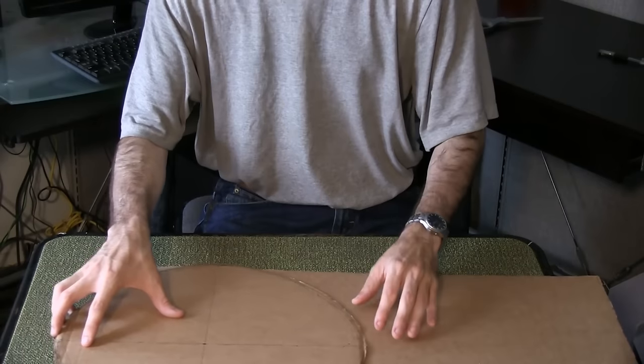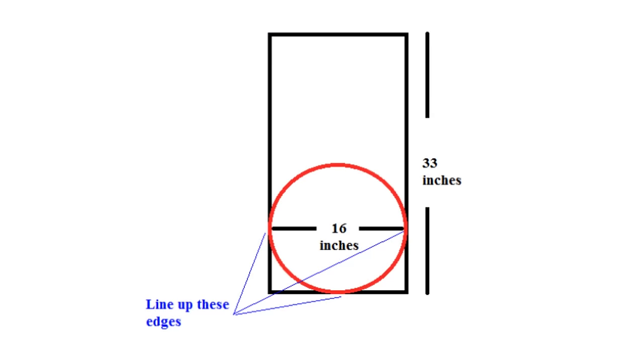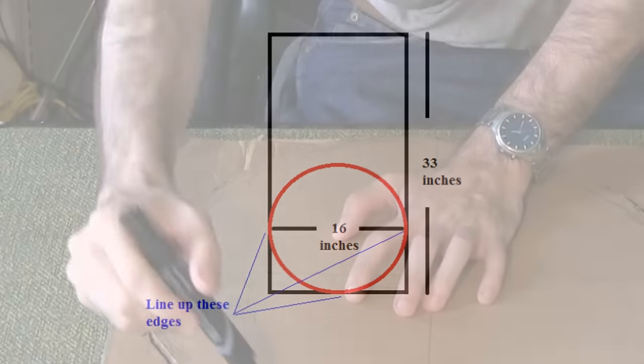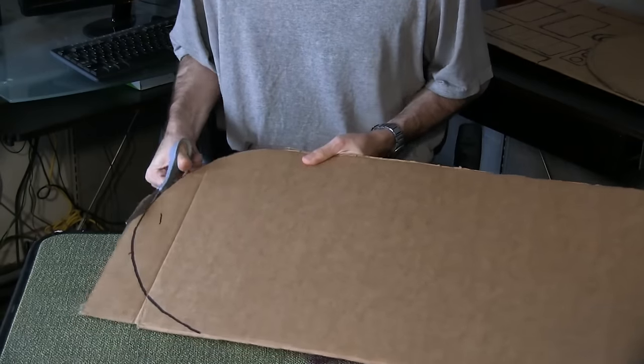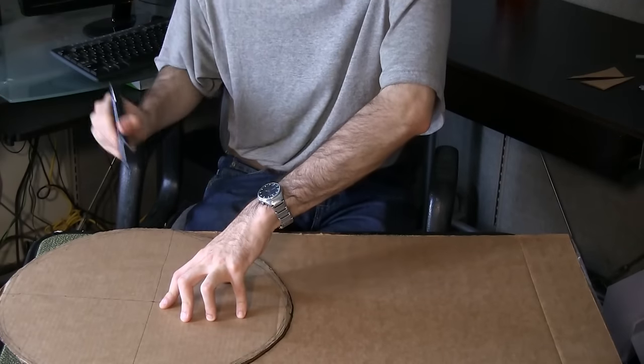Line up three sides of the rectangle with the edges of the circle. Trace the circle onto the rectangle piece and cut away any excess at the bottom. Trace the top half of the circle to serve as a marker.